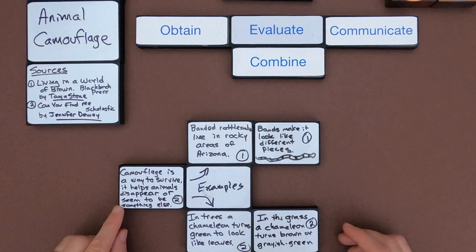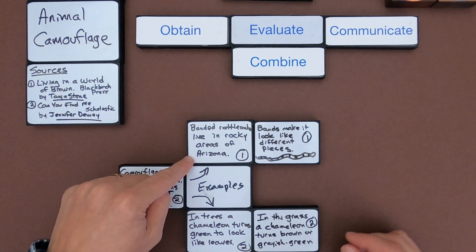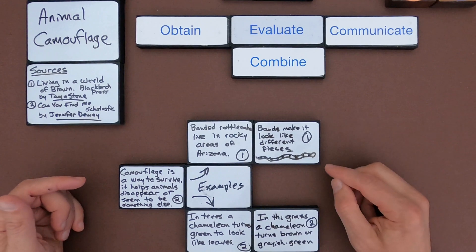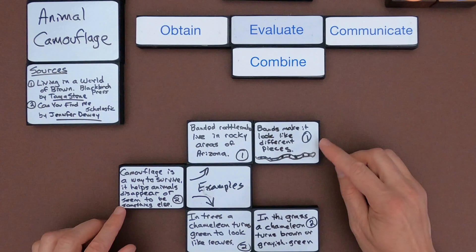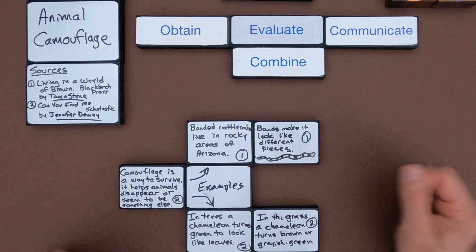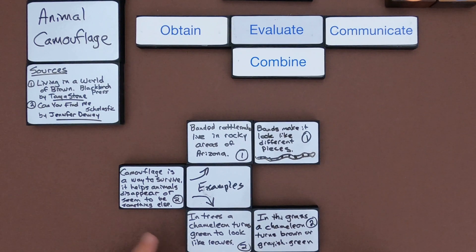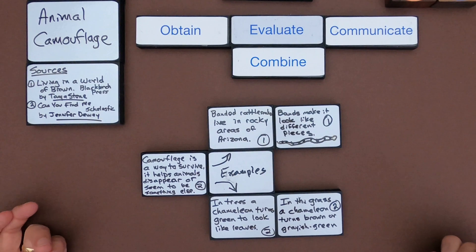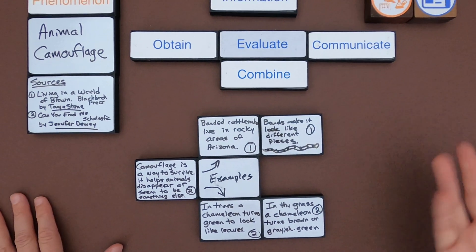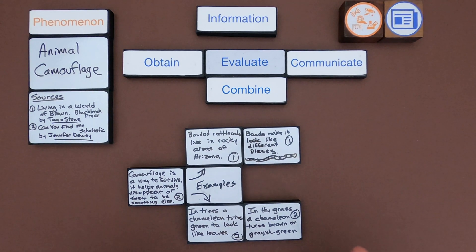So I would say maybe there are two examples of this. So I'd start with what camouflage is and then I'd say two examples. The banded rattlesnake live in rocky areas. The bands make it look like different pieces. And so going back to the camouflage, it allows the rattlesnake to look like rocks or to blend in with the rocks. And then for this other example, in trees, a chameleon turns green to look like leaves. So it's pretending to be something else. And in grass, a chameleon turns brown or grayish green. And that allows it to look like something else. In this case, it's going to be grass. And so that's my thinking around animal camouflage. What I'm going to do is I'm going to set up another set of texts and then you'll have a chance to do the same.